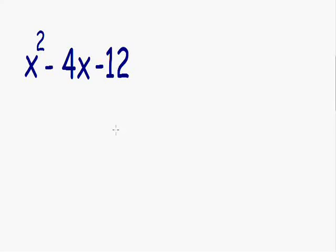So, here we have another example where we need to factor the trinomial. But in this example, notice how we have a negative constant. We have a negative 12. And notice how we also have a negative sign in front of our x term. We have a negative 4x.